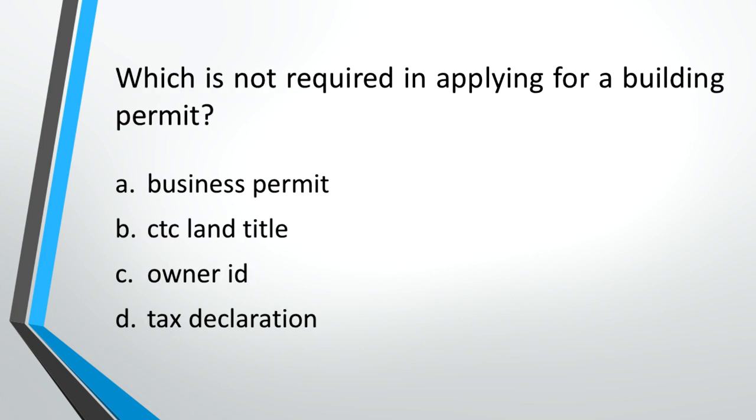Which is not required in applying for a building permit? A: Business Permit, B: CTC Land Title, C: Owner ID, D: Tax Declaration. Answer: A, Business Permit.